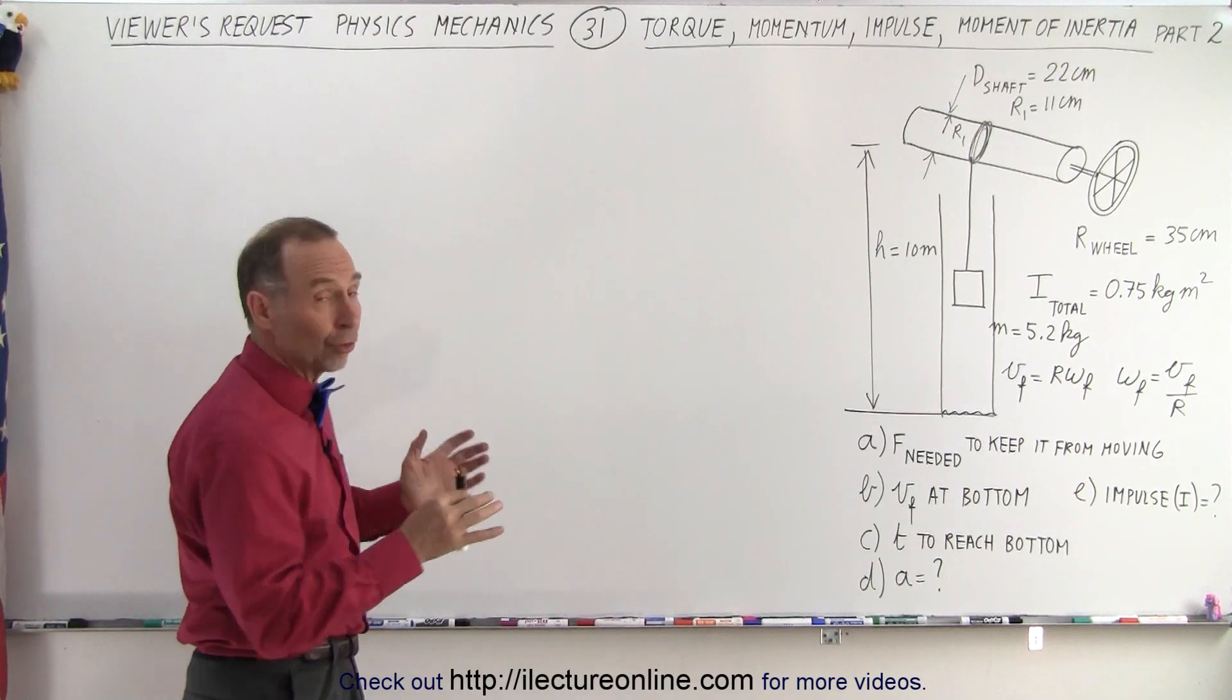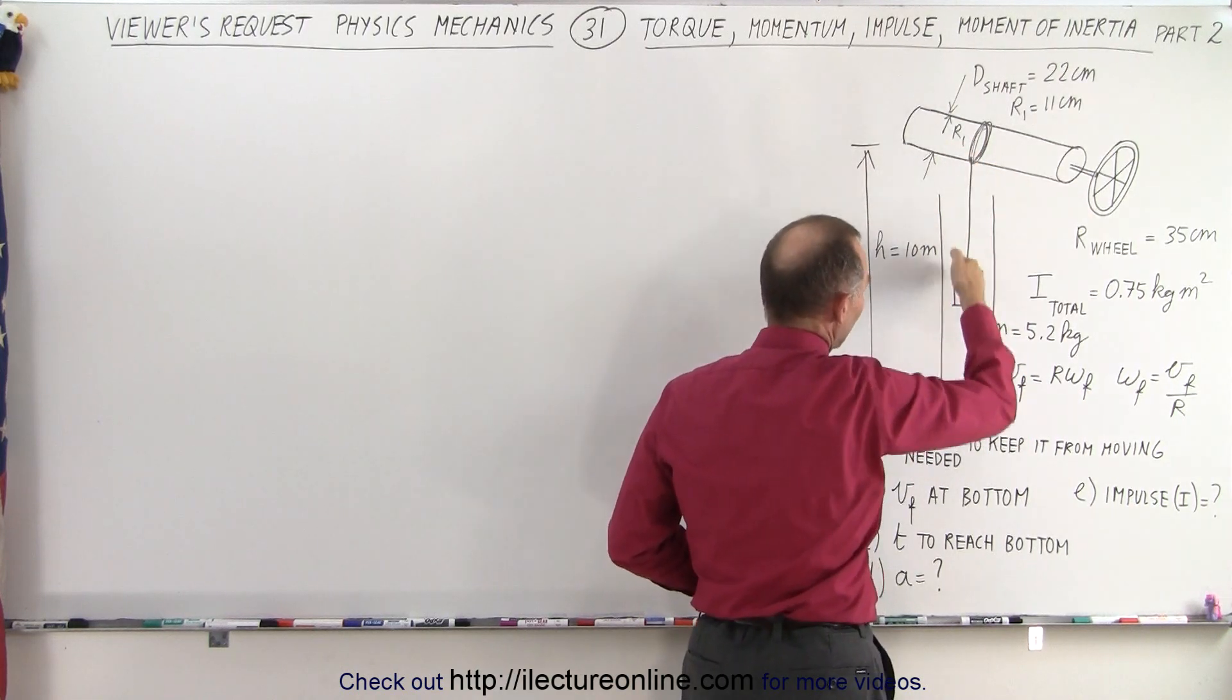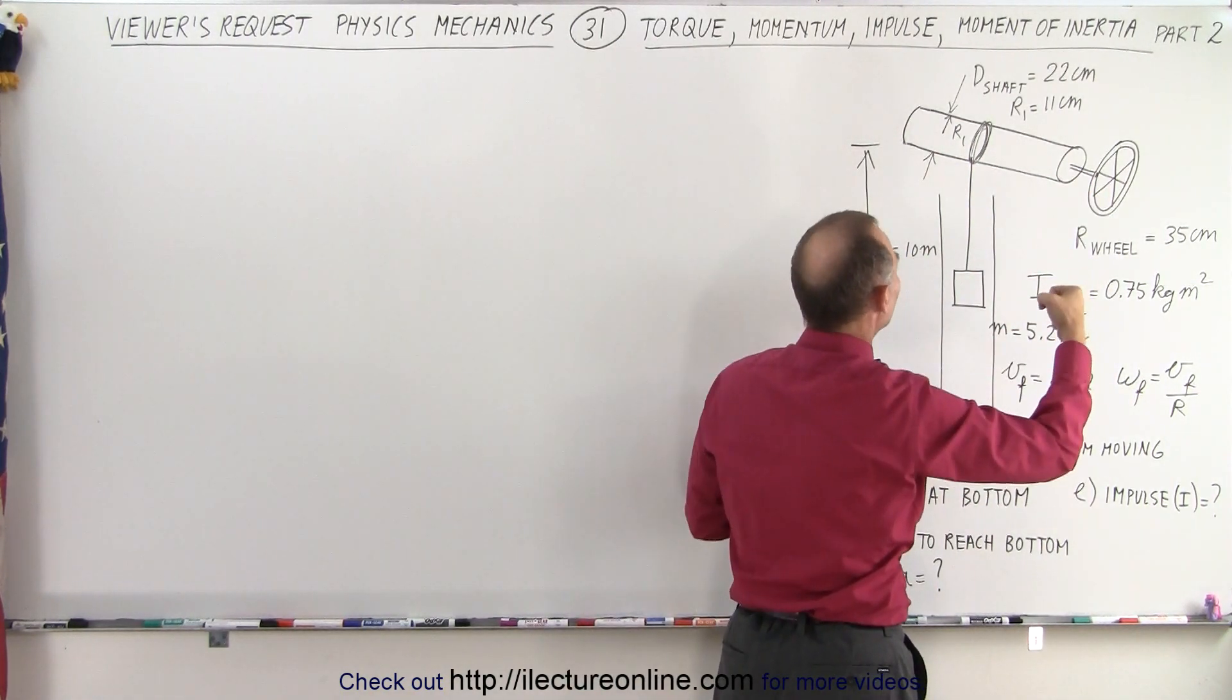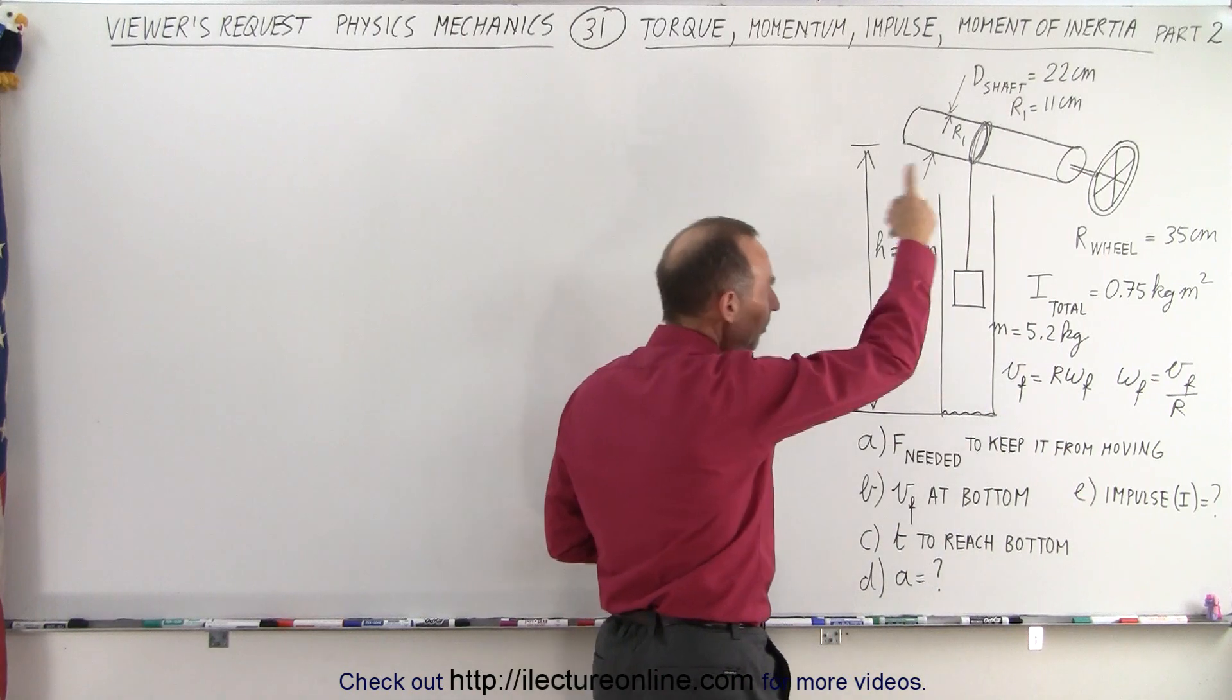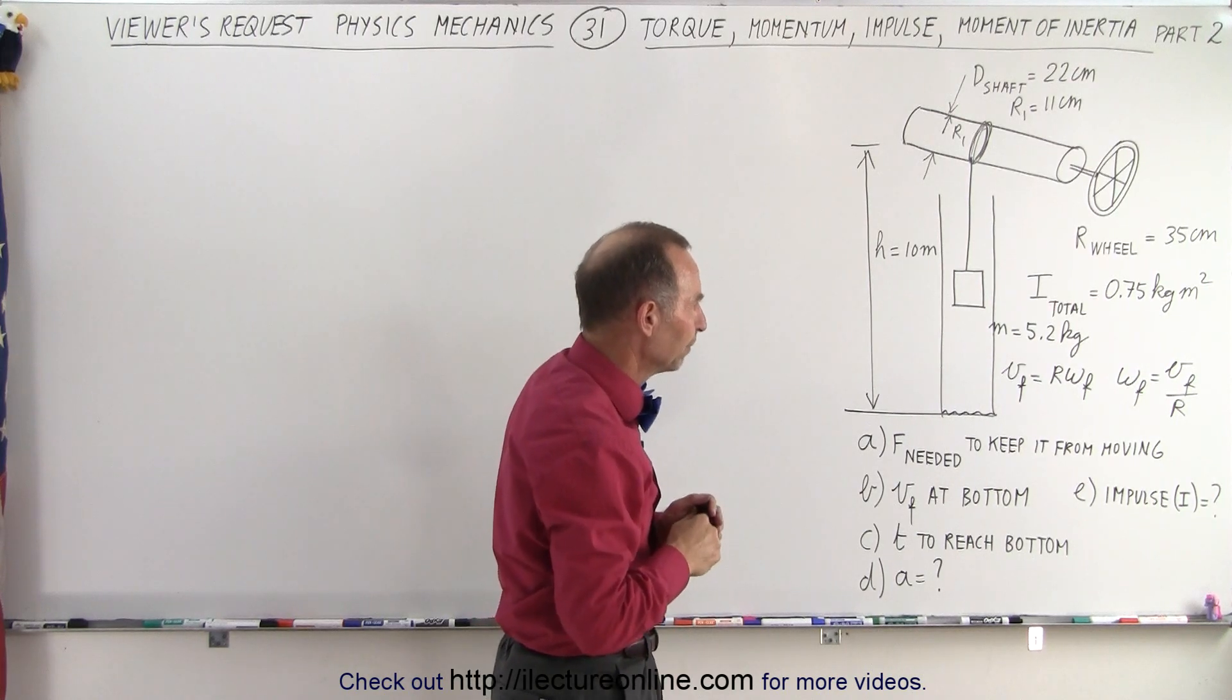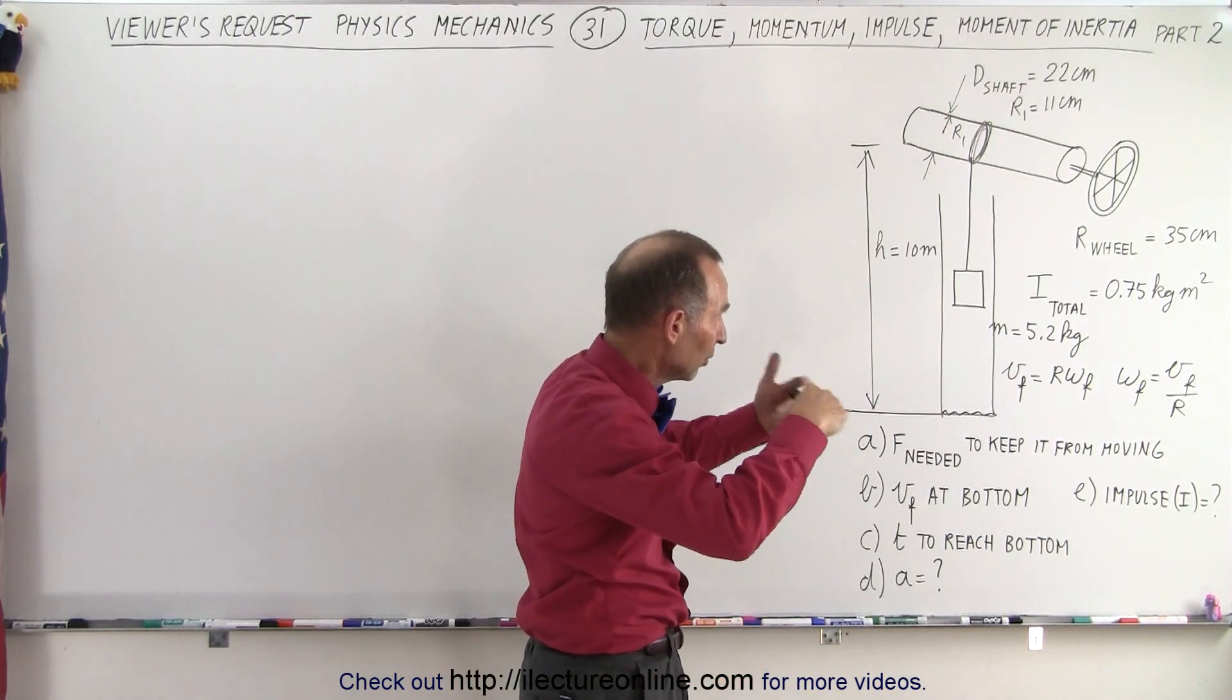So for part C, and again to quickly review what we're doing, we have a shaft over a well. We have a rope attached to wound around the shaft. The rope comes down. There's a bucket with a mass of 5.2 kilograms. The shaft has a wheel attached to it, which allows you to work the shaft. The radius of the shaft is given 11 centimeters. The radius of the wheel is 35 centimeters. And the moment of inertia of the whole structure is 0.75 kilogram meter squared. And the bucket is allowed to go down 10 meters under the weight of the bucket.